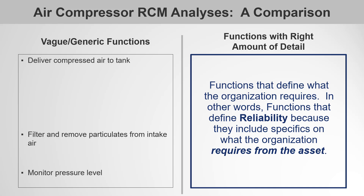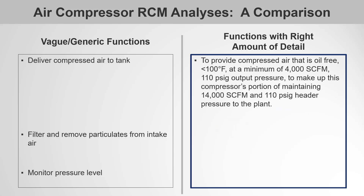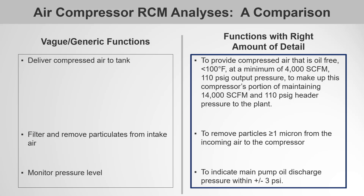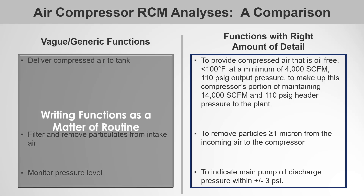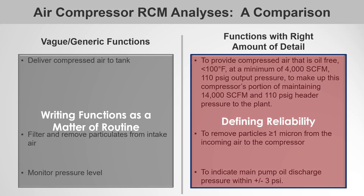Now let's look at functions that define what the organization actually requires — functions that define reliability because they include specifics. To provide compressed air that is oil-free, at less than 100 degrees Fahrenheit, at a minimum of 4,000 standard cubic feet per minute at 110 psig output pressure, to make up this compressor's portion of maintaining 14,000 standard cubic feet per minute and 110 psig header pressure to the plant. To remove particles greater than or equal to 1 micron from incoming air. To indicate main pump oil discharge pressure within plus or minus 3 psi. This is defining reliability.